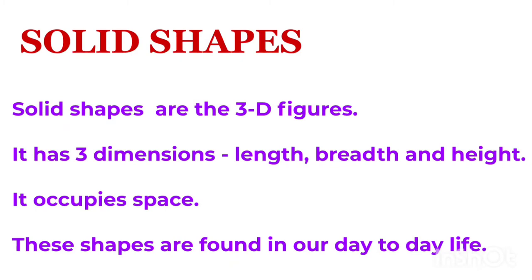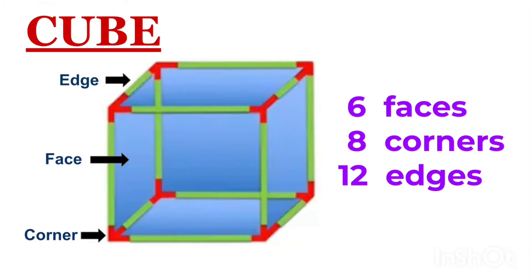Cube. A cube is a 3D shape. It has edges, faces, and corners. The surface all around the cube is called the face of the cube. The line segment where two faces meet is called the edge of the cube. It has six faces, twelve edges, and eight corners.